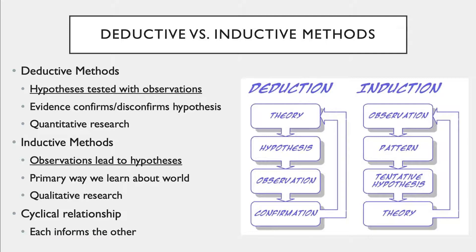Inductive methods begin with observations. With inductive research methodology, the researcher observes events and then devises hypotheses based on those observations. Not only is this the foundation of qualitative research methodologies, it's also the primary way we learn about the world. Inductive and deductive research methods actually have a cyclical relationship in that they each inform the other. Inductive methods are often utilized when the hypothesis or phenomenon of interest is poorly understood, while deductive methods are a great way of statistically analyzing the accuracy of hypotheses that may have derived from inductive methods.